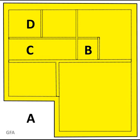Net internal area or usable floor area (UFA): the NIA is the GIA less the floor areas taken up by lobbies, enclosed machinery rooms on the roof, stairs and escalators, mechanical and electrical services, lifts, columns, toilet areas other than in domestic property, ducts, and risers.